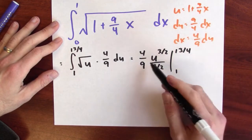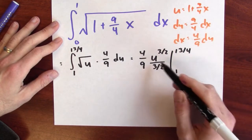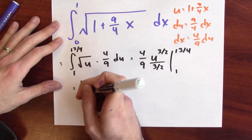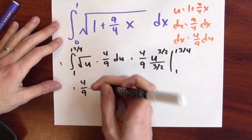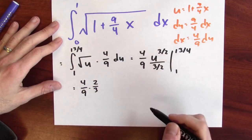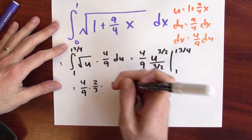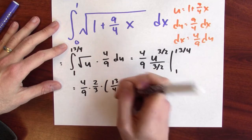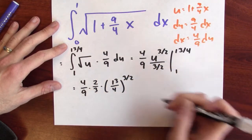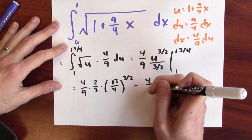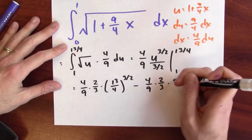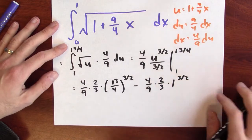So then I just plug in 13 fourths and take the difference. This is 4 ninths times 2 thirds — writing that instead of dividing by 3 halves — times 13 fourths to the 3 halves power, minus 4 ninths times 2 thirds times 1 to the 3 halves power.